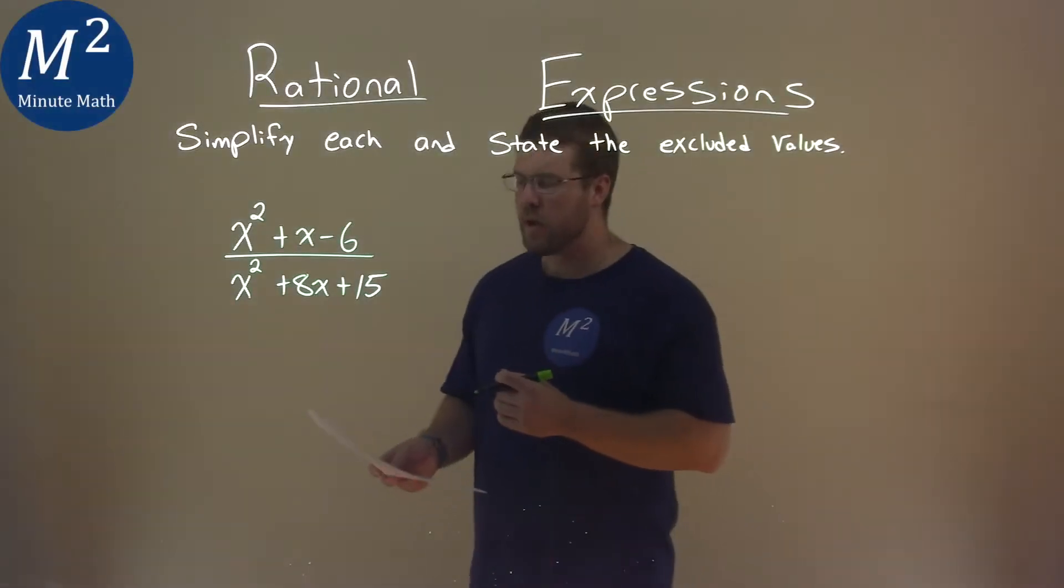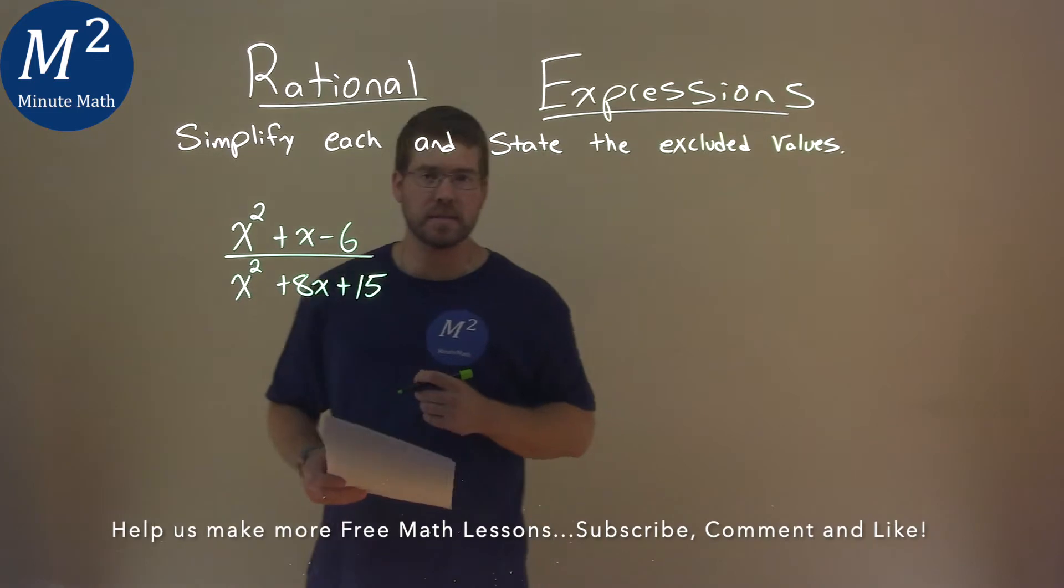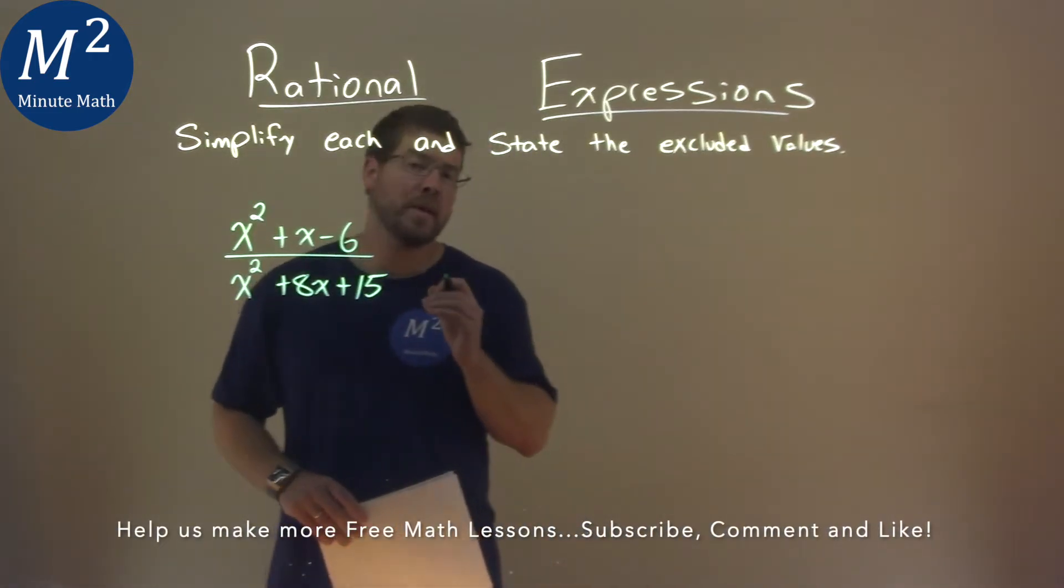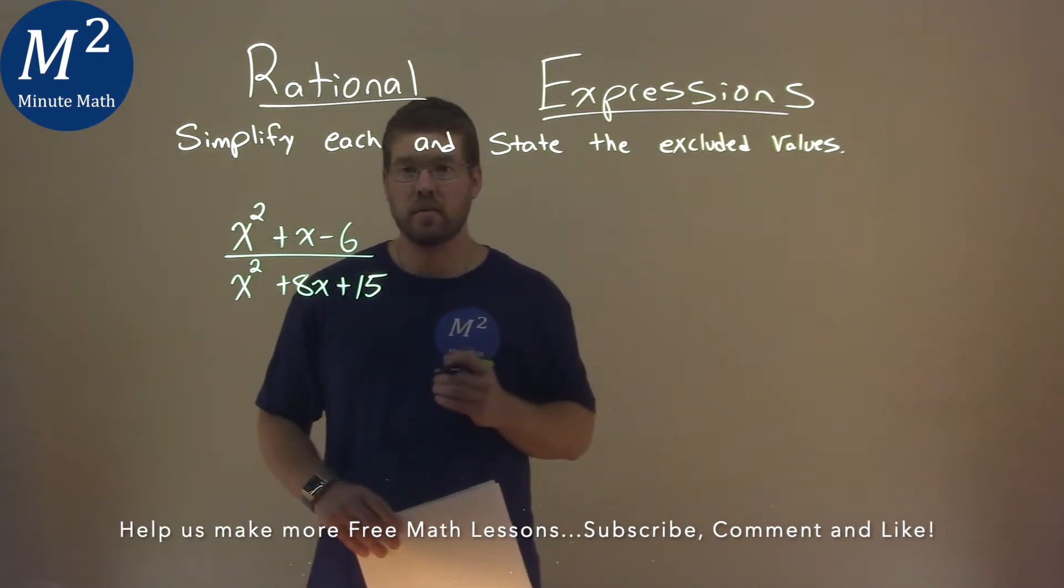We're given this problem right here: x squared plus x minus 6 over x squared plus 8x plus 15, and we need to simplify this and state the excluded values.